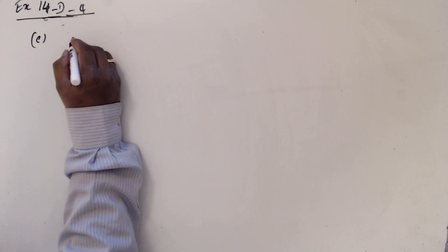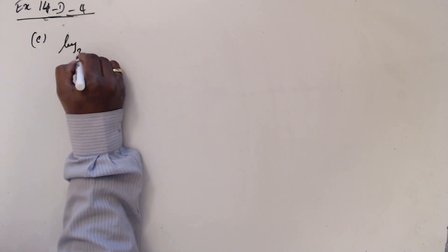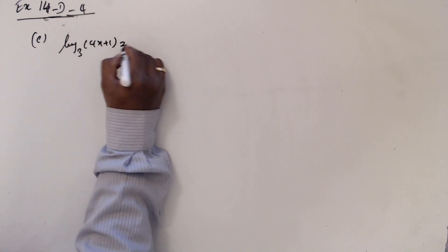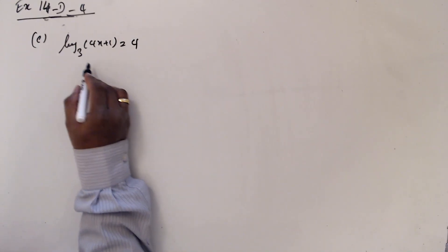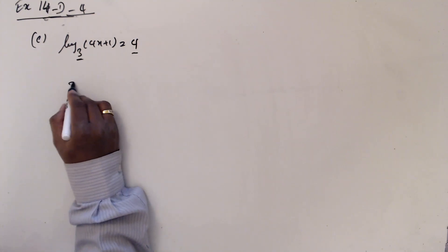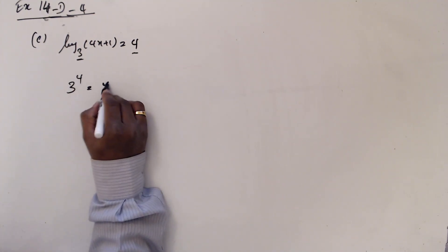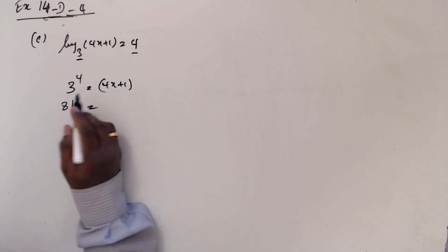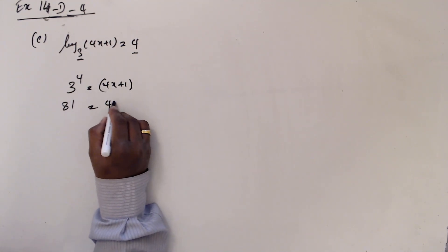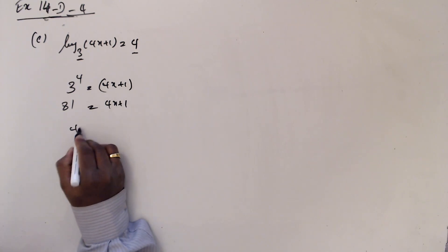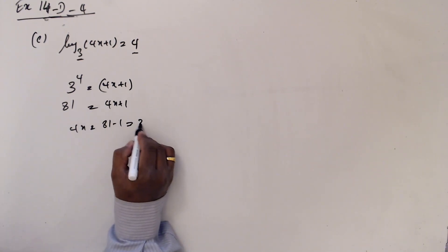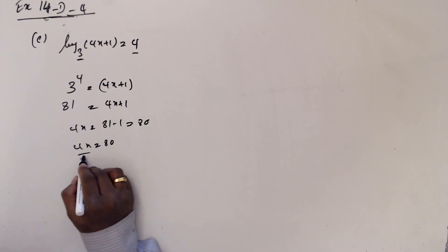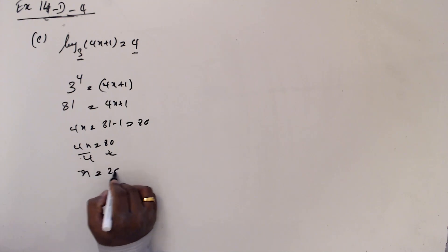This is e: log base 3 of 4x plus 1 equals 4 — this is base, this is power. So 3 to the power 4 equals 4x plus 1. 4x plus 1 — so 3 to the 4 is going to be 81. 81 equals 4x plus 1, so 4x equals 81 minus 1 which is 80. Divided by 4, x equals 20.